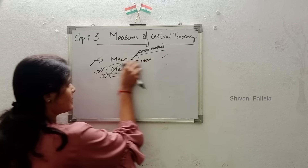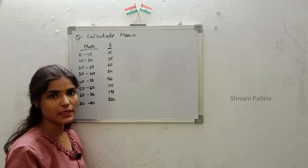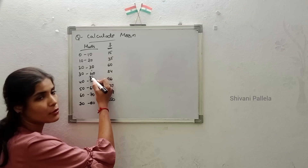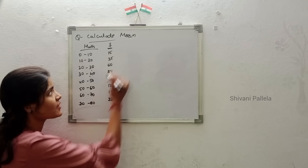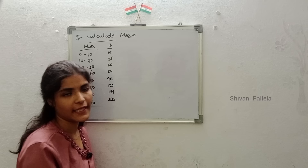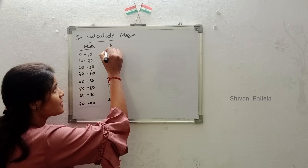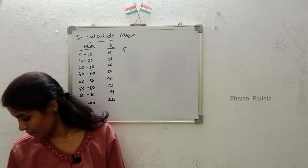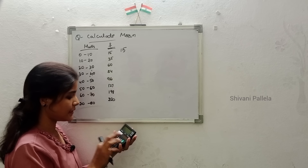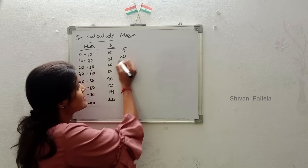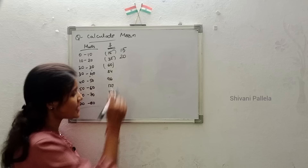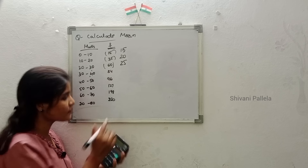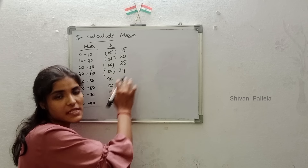Now we will discuss mean. In previous year question papers they have asked to calculate mean and given marks intervals like 0–10, 10–20, 20–30, 30–40, up to 70–80, along with frequency. The frequency given is in cumulative form, so we need to convert it: 35 minus 15 is 20, 60 minus 35 is 25, 84 minus 60 is 24, and so on.